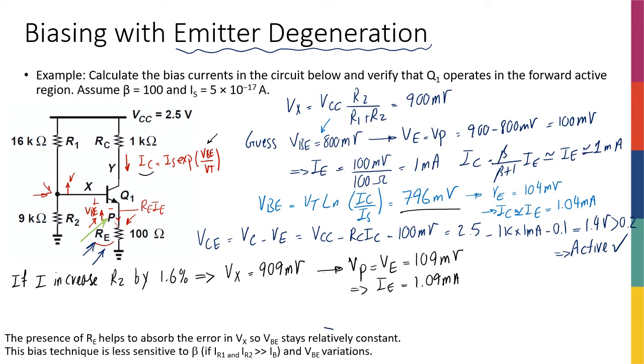So by 1.6% increase in the value of resistor, I had an increase of 9% in my current at the emitter or collector. Compare this to 1% increase and 36% increase for the circuit that we have for the normal resistive divider circuit. You will see that we have improved this by a factor of 4 or 5.